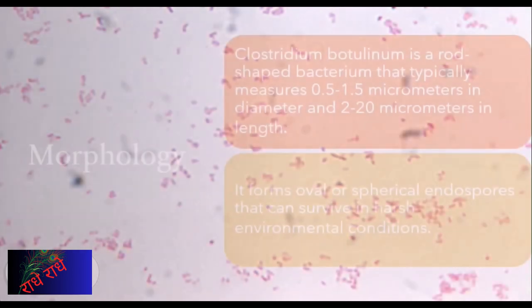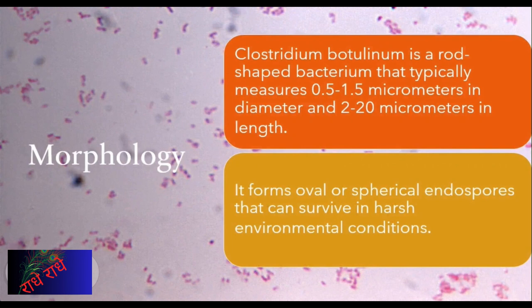Clostridium botulinum is a rod-shaped bacterium with measurements of 0.5 to 1.5 micrometers in diameter and 2 to 20 micrometers in length. It also produces oval or spherical endospores which are capable of enduring even the toughest of environmental conditions.